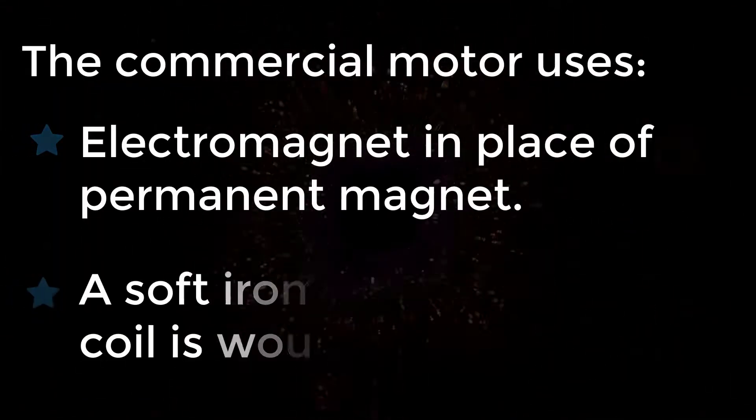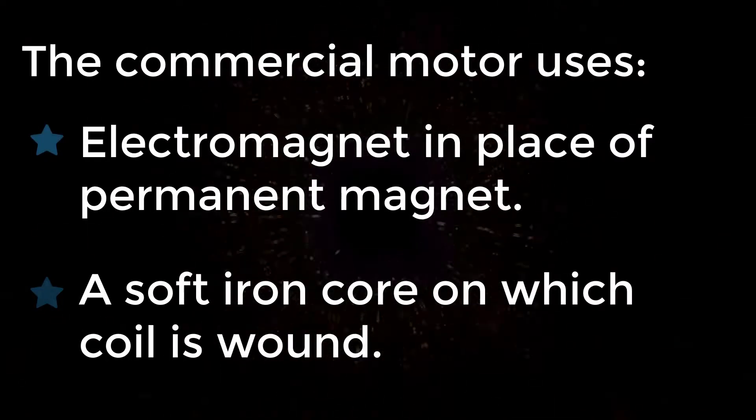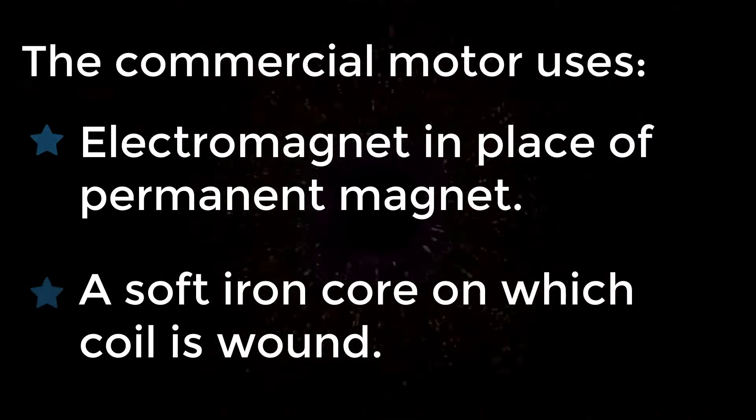The commercial motor uses: 1. Electromagnet in place of permanent magnet. 2. A soft iron core on which the coil is wound.